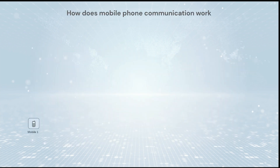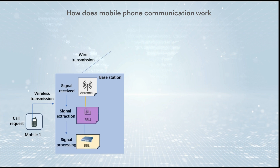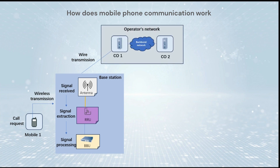How does mobile phone communication work? When you initiate a call request, the antenna of the base station receives the call request and passes it to the RF unit through the feeder for signal extraction, and then passes it to the baseband for signal processing. After processing, the base station transfers the signal to the operator's network, which realizes signal cross-transmission.